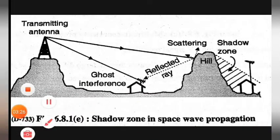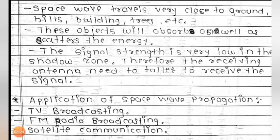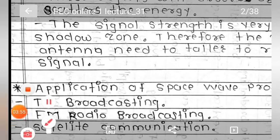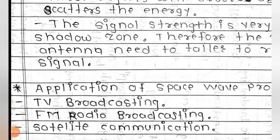हम लोग इसमें application भी देख लेंगे. This is the point-wise description of shadow zone space wave propagation. See the applications of space wave propagation: first is TV broadcasting, second is FM radio broadcasting, and third is satellite communication. यह तीनों examples space wave propagation के हैं. So today's topic ends — thank you.